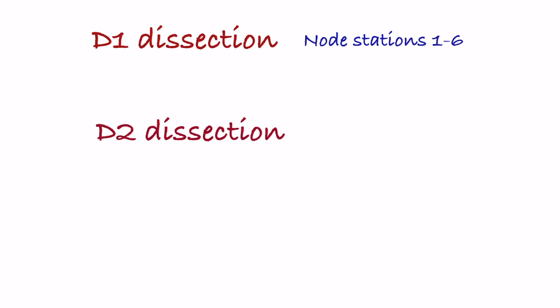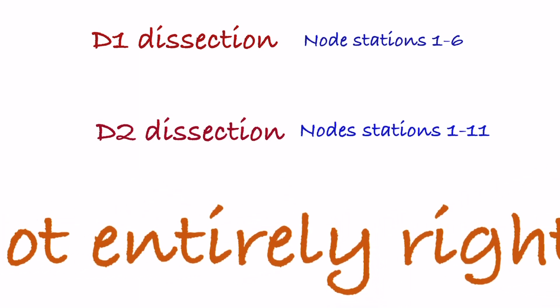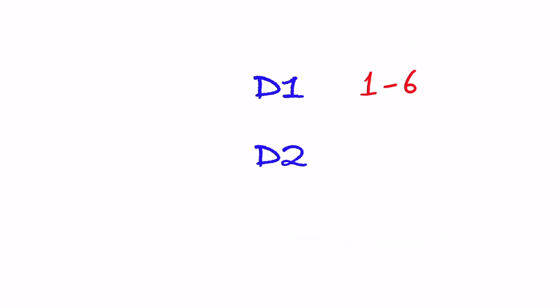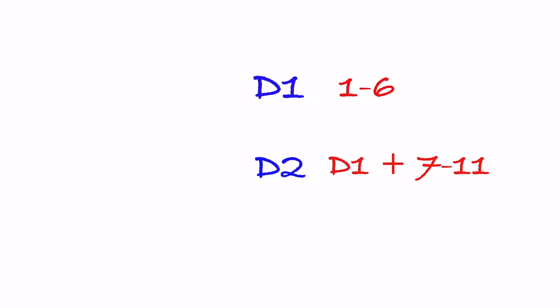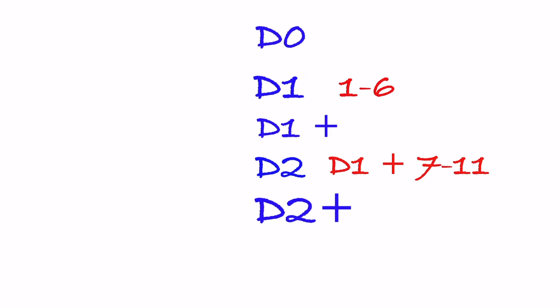If you think that D1 dissection means removal of node stations 1 to 6 and D2 removal of node stations 1 to 11, then you are not entirely right. While this is an easy way to understand D1 and D2 dissection in gastric cancer, there is more to it. Let us understand what exactly is D0, D1, D1 plus, D2, and D2 plus node dissection in gastric cancer.